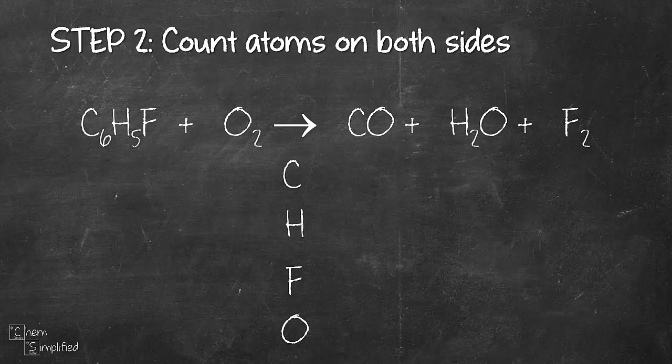Next, we need to count the atoms on both sides of the equation. So let's start with the left hand side. For carbon, we have 6 carbon and we have 5 hydrogen, 1 fluorine, and 2 oxygen.